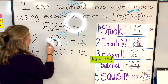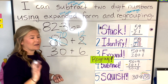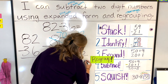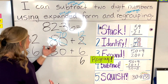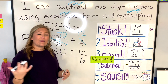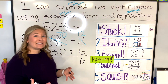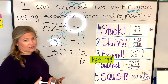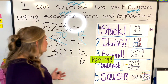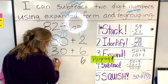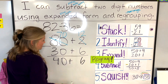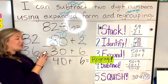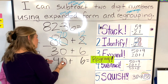Now I can subtract. 12 minus six — I remember six plus six equals 12, so 12 minus six is six. Then I subtract my tens: 70 minus 30, or seven tens minus three tens. Seven minus three is four, so I have four tens, which is 40. My answer is in expanded form: 40 plus six is 46.